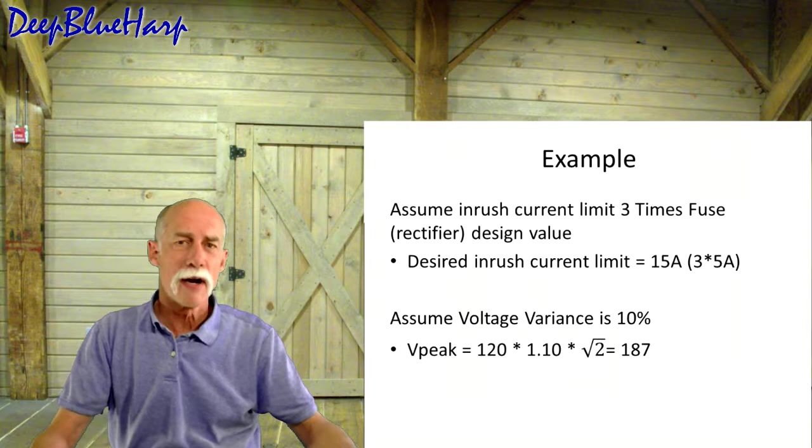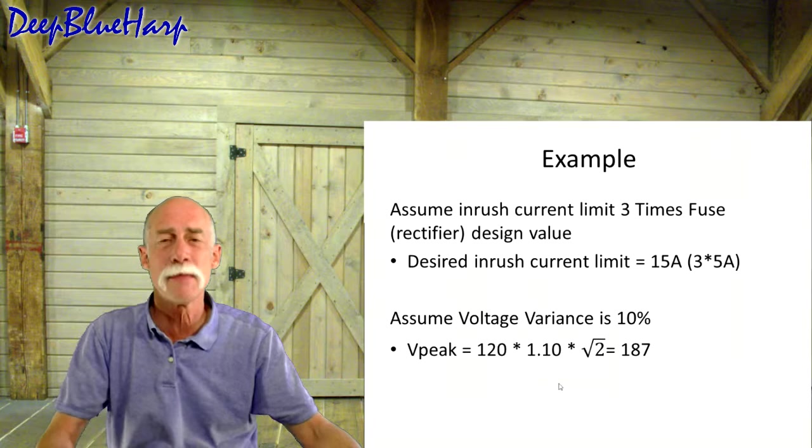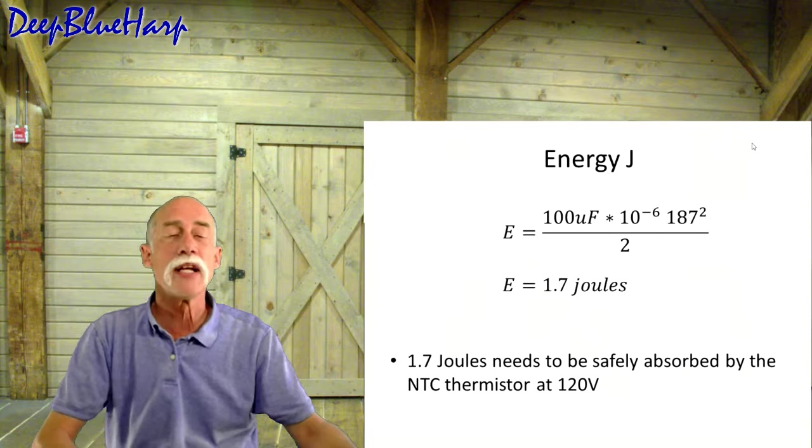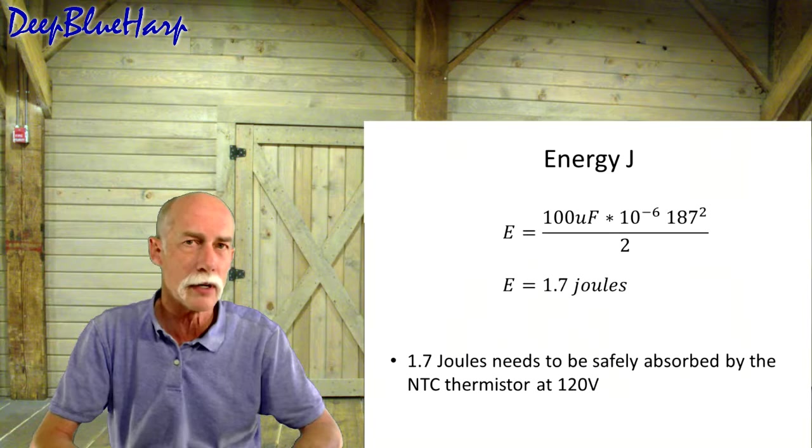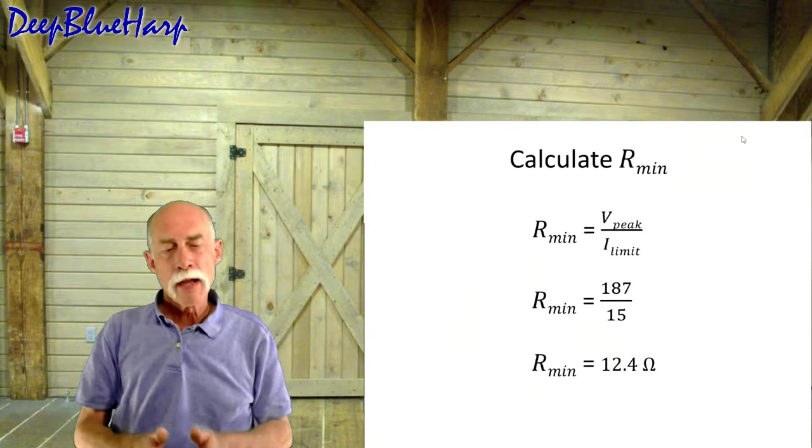Assume the inrush current is three times the fuse or rectifier design value. So the fuse, slow blow fuse, is 5 amps. We're going to set the limit for 15 amps. The line voltage is plus or minus 10%. So 10% times 120 square root of 2 is 187 volts. The energy it needs to dissipate at the capacitor, if it were being charged at 120 volts, would be 1.7 joules. This is the thermistor at 120 volts. We're not quite done yet.